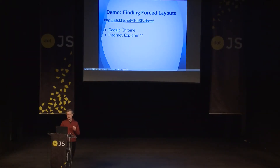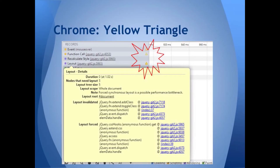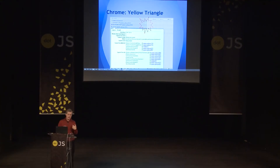I'm going to skip the live demo and show you what actually happens when you run the browser tools to determine forced layouts. Chrome makes it really easy — you see the little yellow triangles, which tell you that during that operation there was a forced layout. You can hover over them and it will tell you where the forced layout occurred. In this case, the code used jQuery to create that forced layout — so it appears that jQuery forced the layout. And it did, but only because you asked it to.